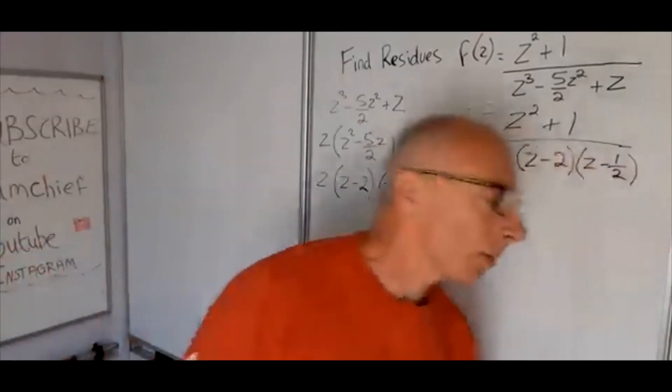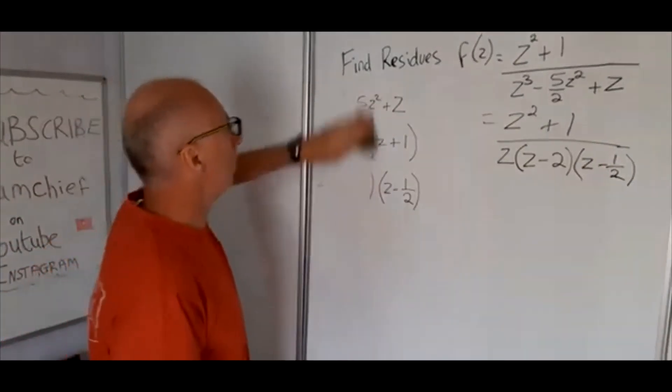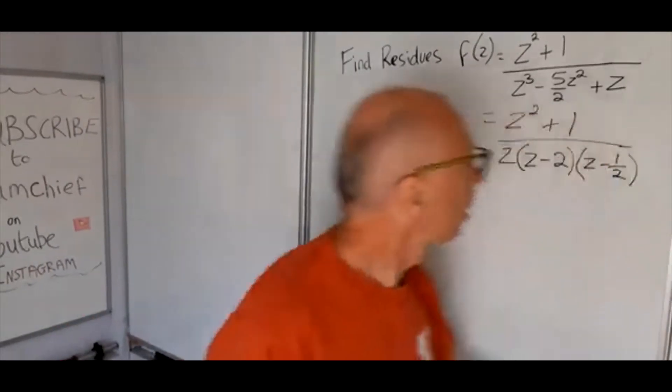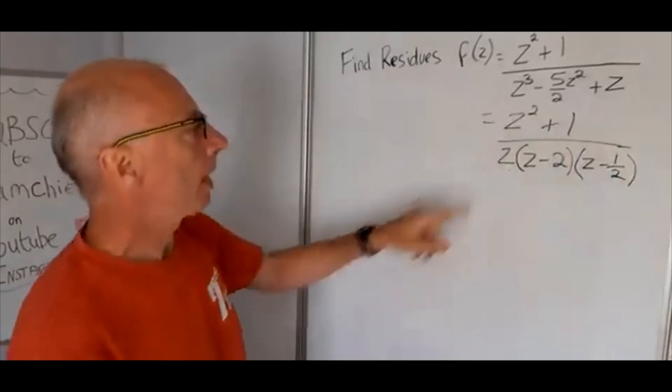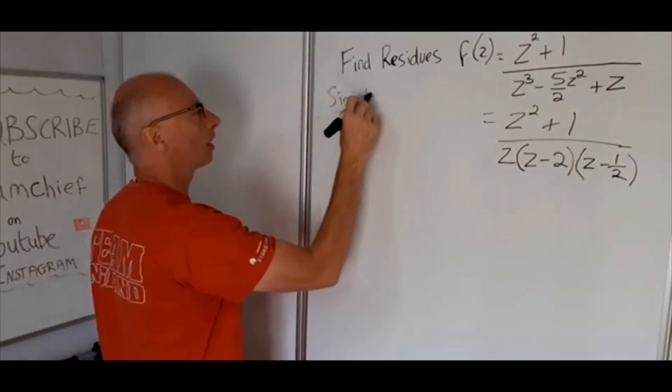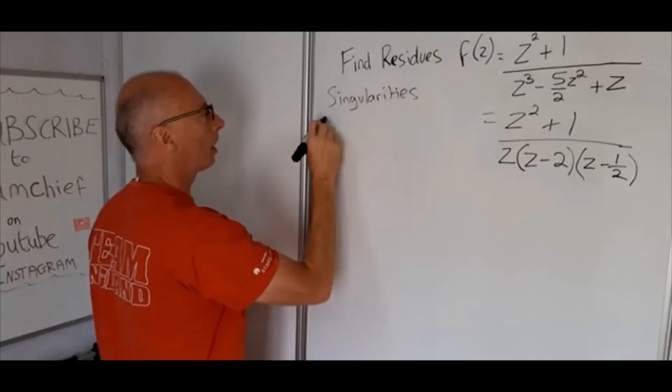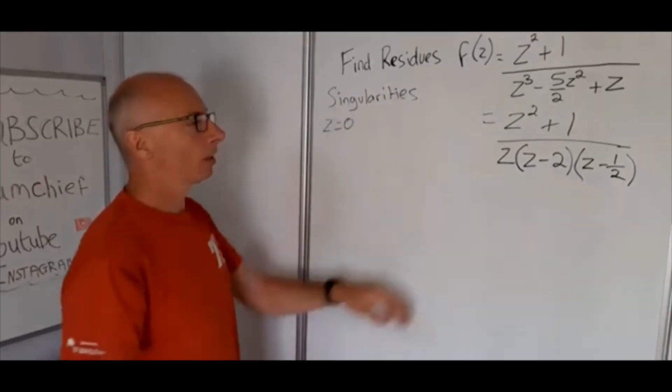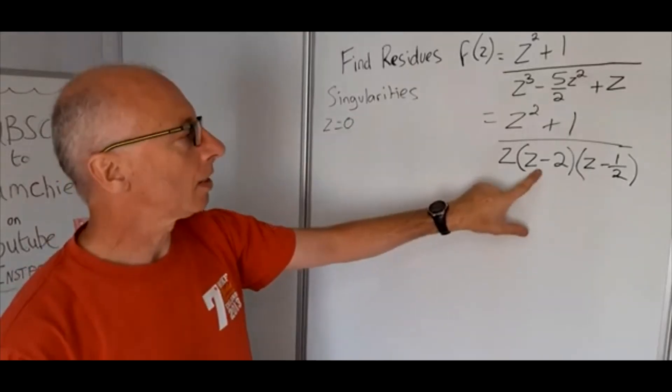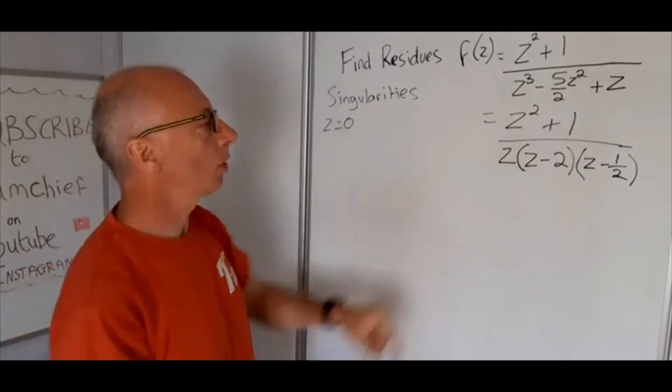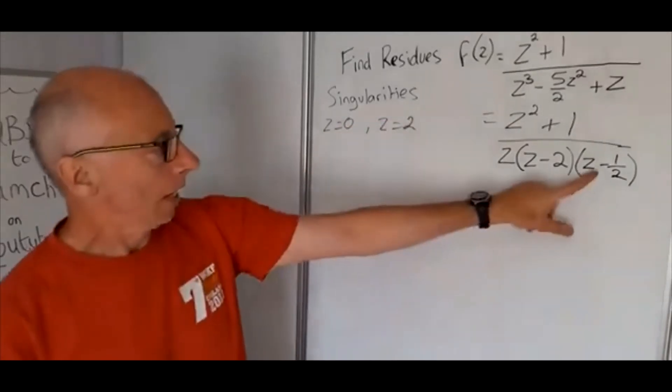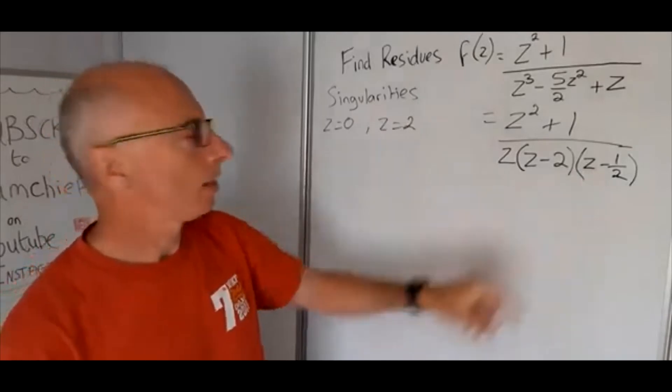Now let's locate where the singularities are, i.e. when the denominator is equal to 0. So we'll have singularities at z equals 0. So if that's 0 it all becomes 0. Now move on to the brackets. So if that becomes 2, that also disappears. So z equals 2 will be another one. And then to get this one to disappear, z equals a half.